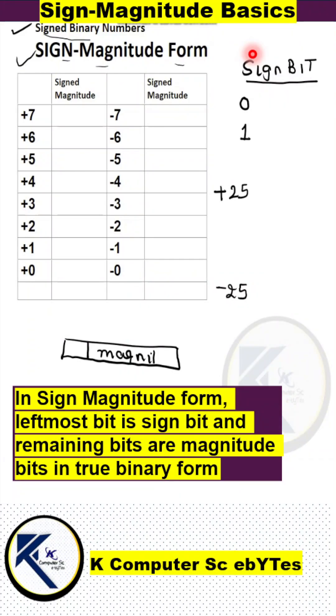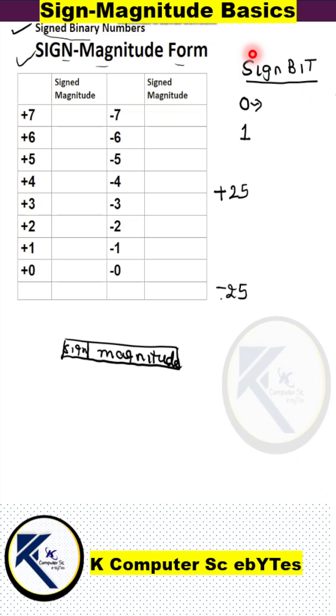The leftmost bit will be the sign bit and the remaining bits form the magnitude of the binary number, which is a whole number in this case. For the sign bit, the leftmost bit will be 0 to indicate a positive number and 1 to indicate a negative number.